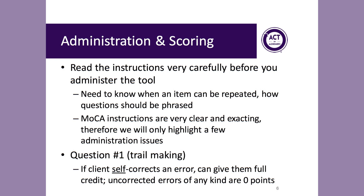You'll need to know which items can be repeated and how questions should be phrased, because this is important for some of the items. The MOCA instructions are very clear and very exacting, so I'm only going to highlight a few administration issues on some of the items. Question number one is about trail making — the patient has to alternate back and forth between numbers and letters. Note that if a patient self-corrects an error and recognizes it and changes course, you can give them full credit. However, uncorrected mistakes of any kind are scored zero points.